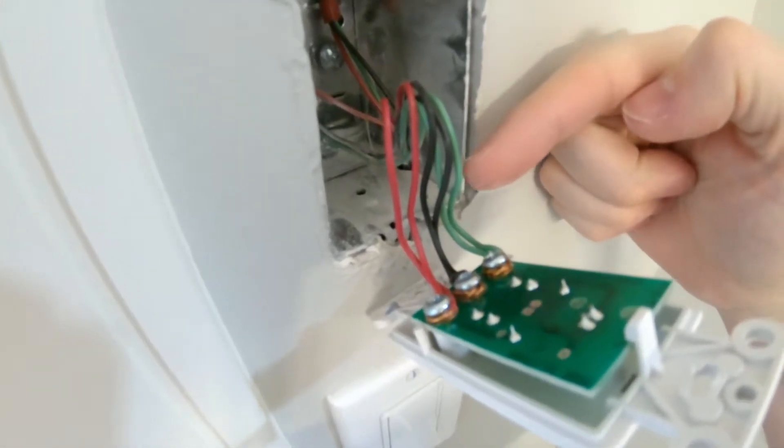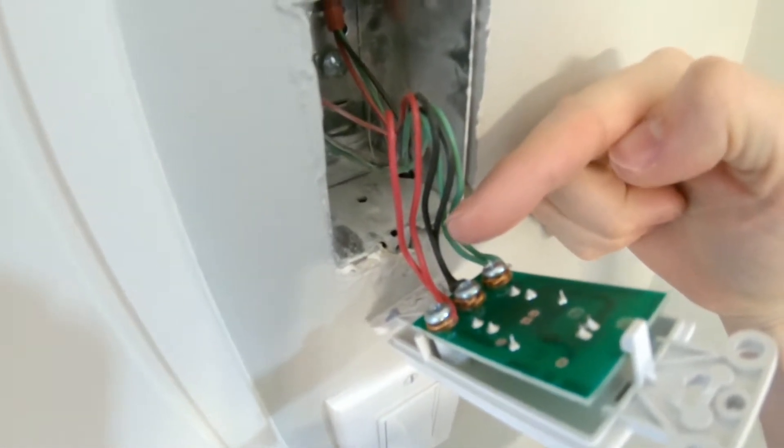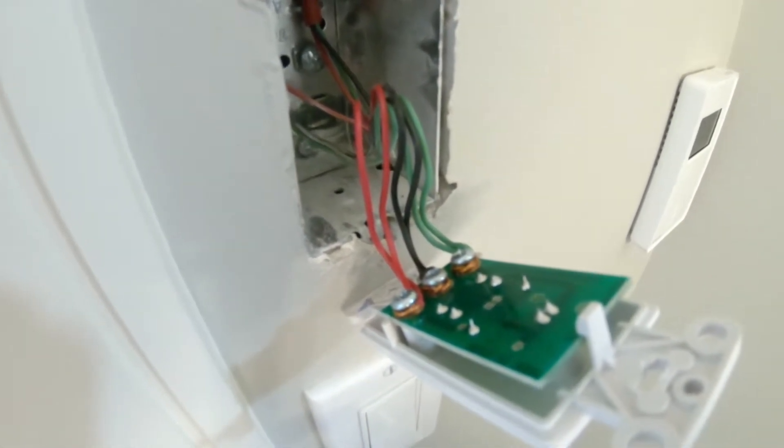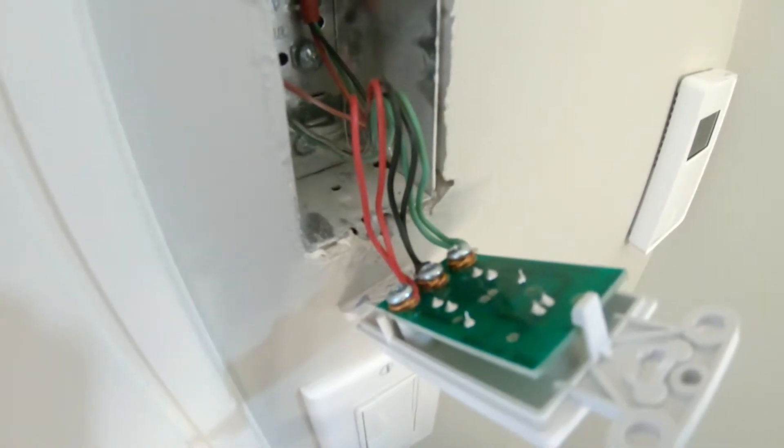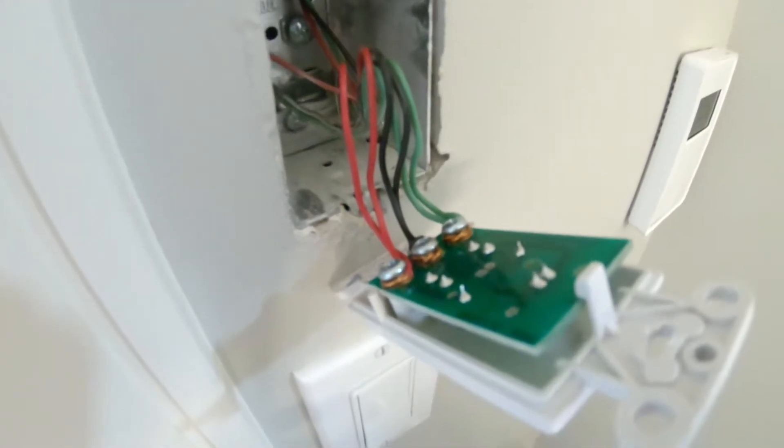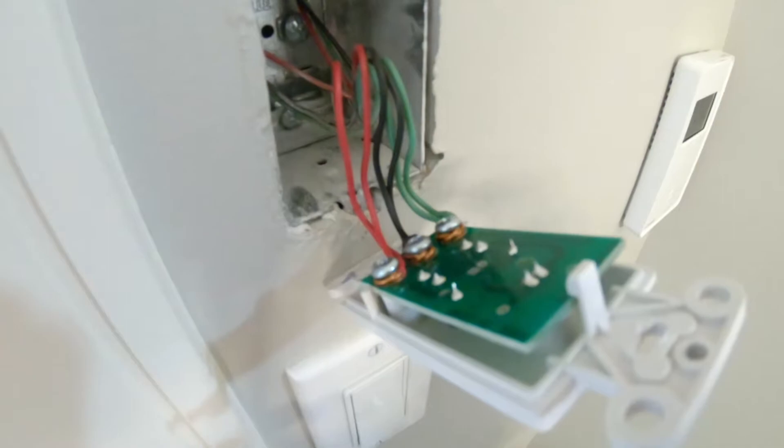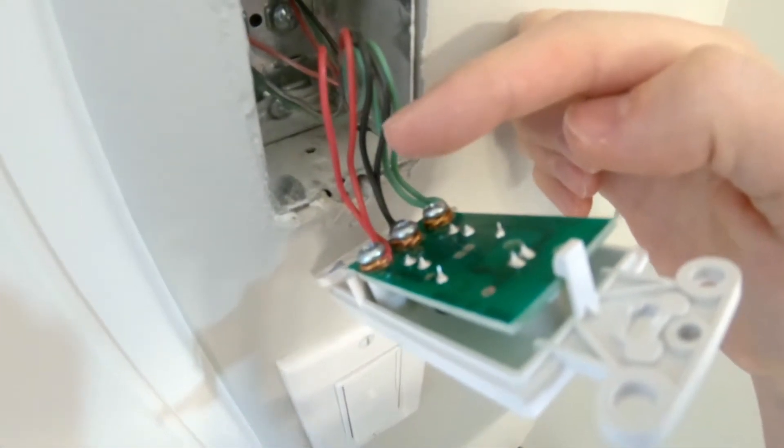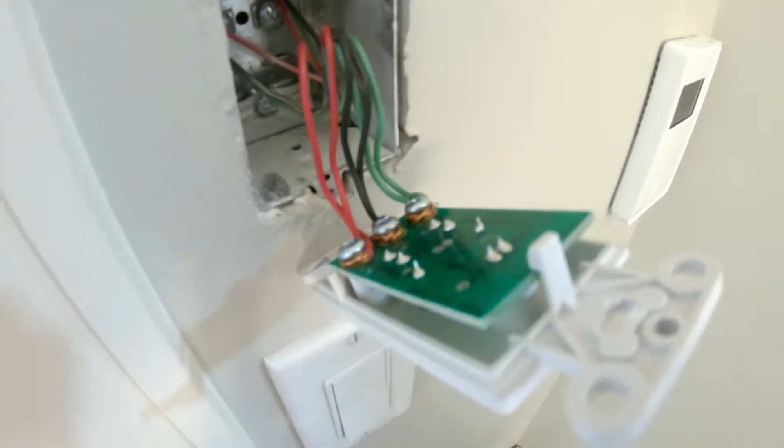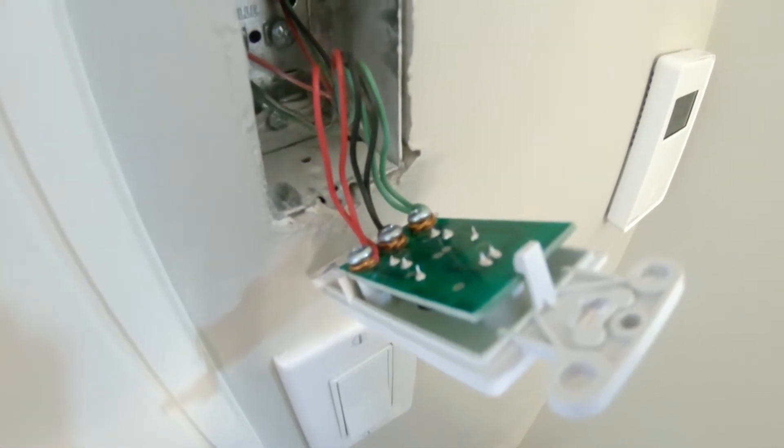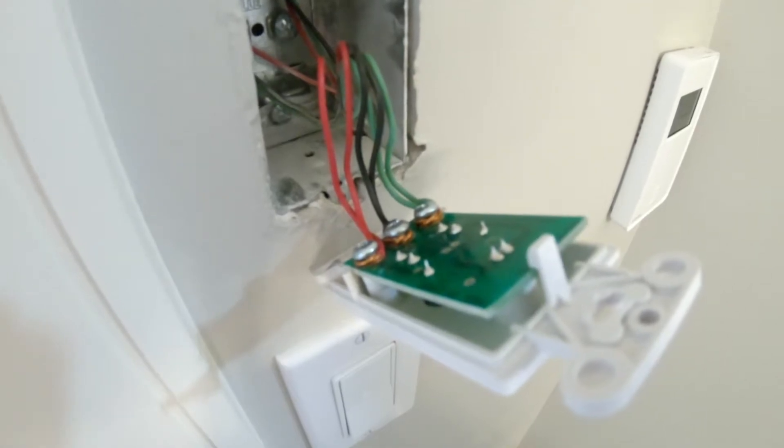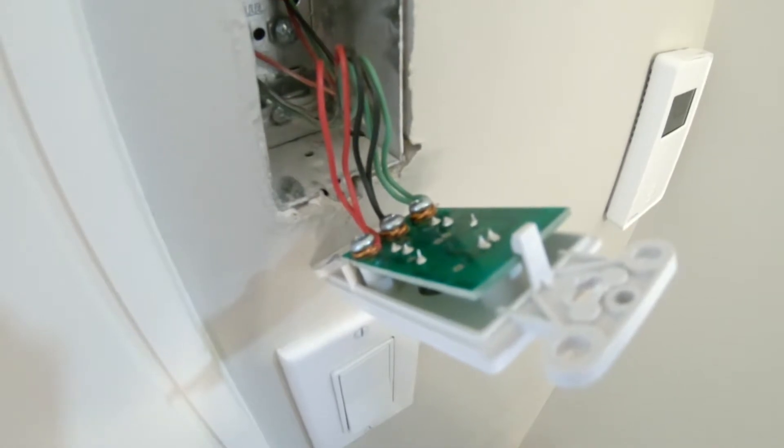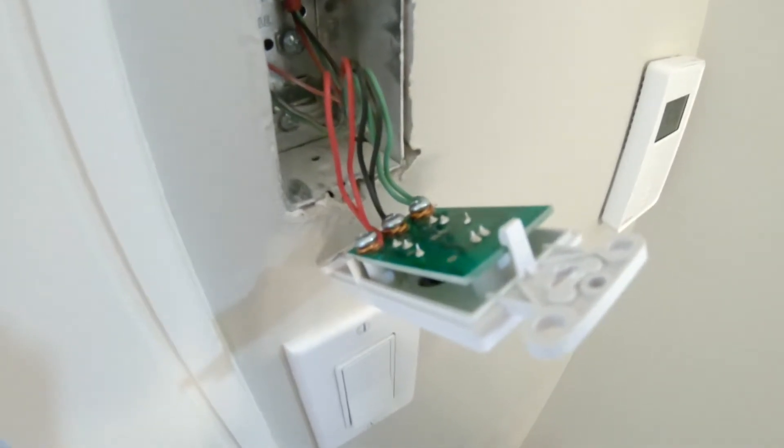So here you can see we got two greens, two blacks, and two reds. Now this is the one that's in my basement, and so this is the first timer. So one of these green wires, one of these black wires, and one of these red wires is going to the HRV unit, and then the other red, black, and green wire is going upstairs to the first timer on the circuit.